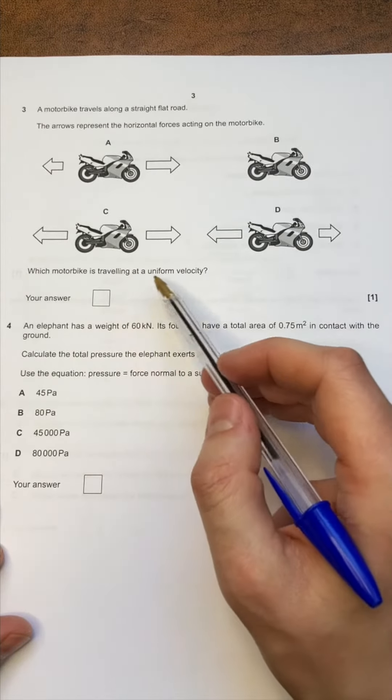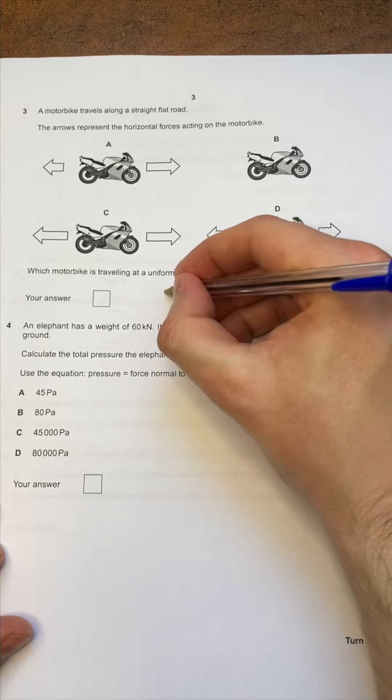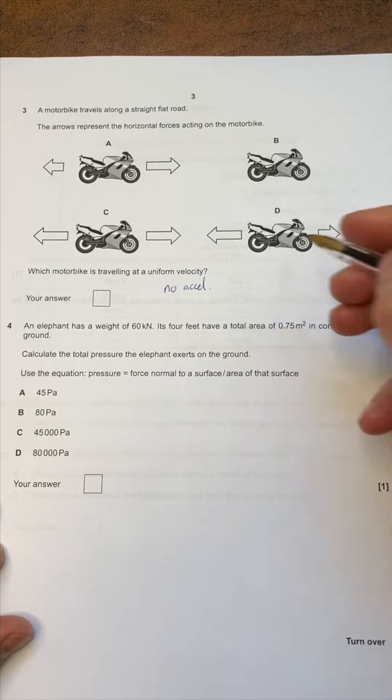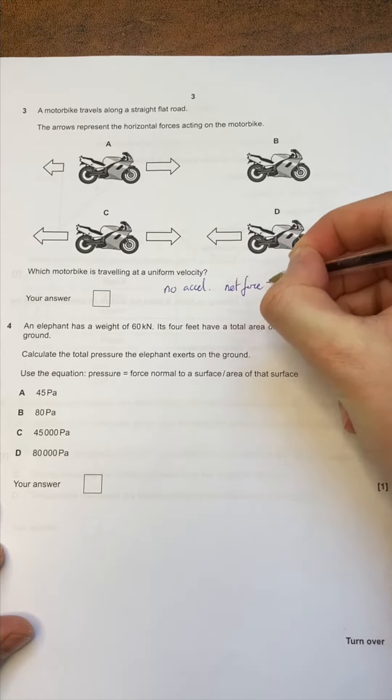Which motorbike is travelling at uniform velocity? Uniform velocity means that there's no acceleration, which means that we should have a resultant force of 0, or net force equals 0.